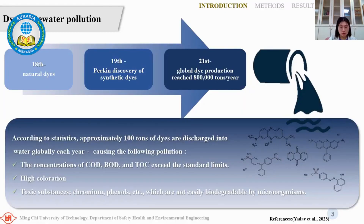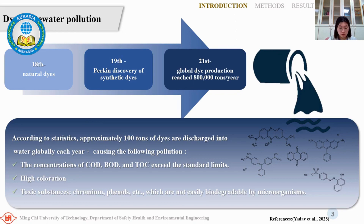In the 19th century, natural dye was mainly used until the discovery of synthetic dye. This led to widespread adoption of synthetic dye. By the 21st century, global dye production reached 800,000 tons annually. This has led to significant environmental pollution — about 100 tons of dye are discharged into water globally each year, resulting in excessive COD, TOC, and low dissolved oxygen concentration in water.